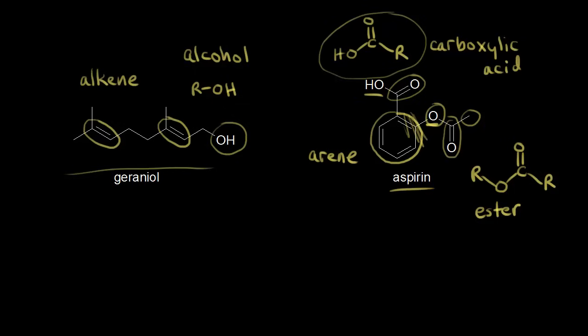Let's look at some common mistakes. One is students will say a carboxylic acid is an alcohol. Sometimes students look at a carboxylic acid and say, 'I see an OH and the rest of the molecule, so isn't that an alcohol?' But since this oxygen is right next to the carbonyl, this is a carboxylic acid.